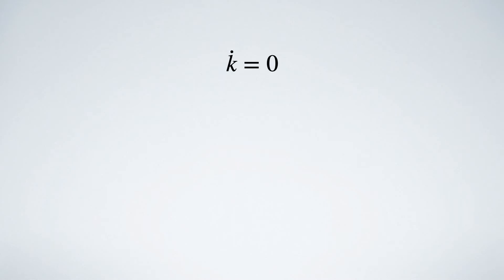K dot being zero means that per capita capital has zero growth rate. But it also means that both total capital and total population grow at some same rate. And if it is produced by a constant return to scale function, total output also grows at that rate.